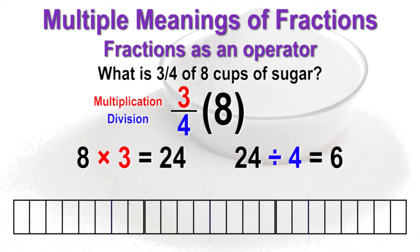Next, divide the twenty-four units into four groups, for a total of six in each group. Three-fourths of eight is six.